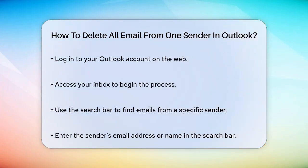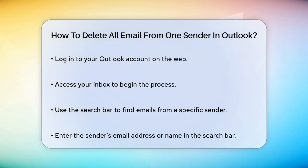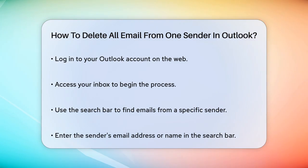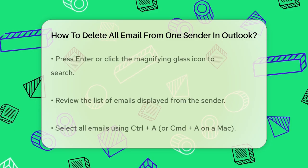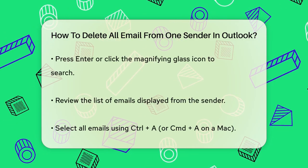First, log in to your Outlook account on the web. Once you're in your inbox, you need to find all the emails from that specific sender. To do this, go to the search bar at the top of the Outlook window and type in the email address or name of the sender.